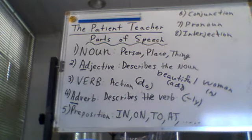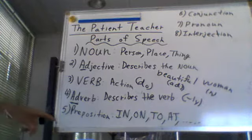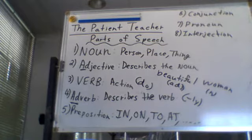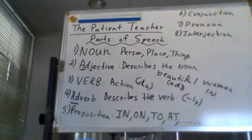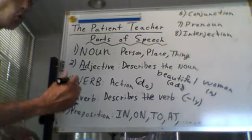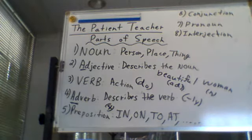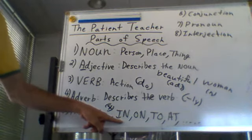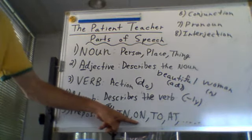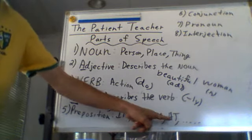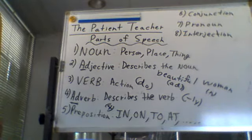The next one is called a preposition, and this one we use very often, so you have to understand what they are and how we use them. The four most often used or most important prepositions are: in, on, to, and at. Those are the ones we use most often.